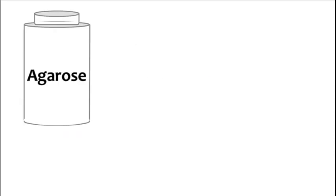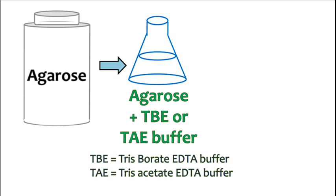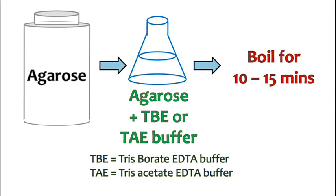Agarose is prepared by dissolving agarose in an appropriate buffer. Usually TAE or TBE buffers are used. The same buffer is also used in the buffer tank to run the gel. The mixture of buffer and agarose is boiled for few minutes. The boiling ensures that the agarose is uniformly dissolved in the buffer.